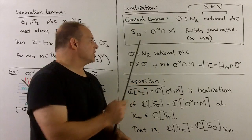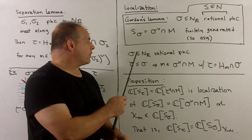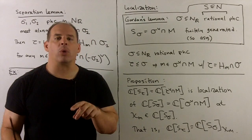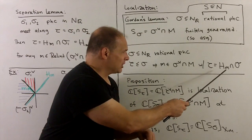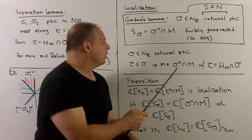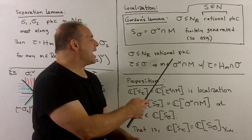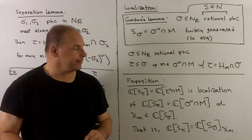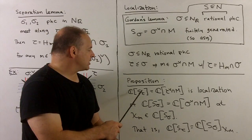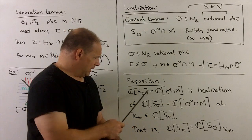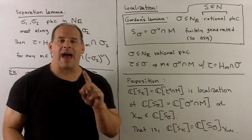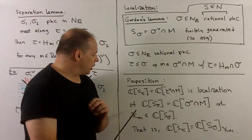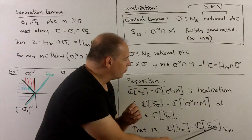For localization: we have sigma a rational polyhedral cone in N_R, and we choose a face tau inside sigma. We can represent tau as sigma intersected with some hyperplane H_m where m is in sigma-check, and since sigma is rational we can assume m is also inside the lattice N. Proposition: the C-algebra over S_tau — where S_tau is tau-check intersected with M — is the localization of the C-algebra over S_sigma at the character chi^m.